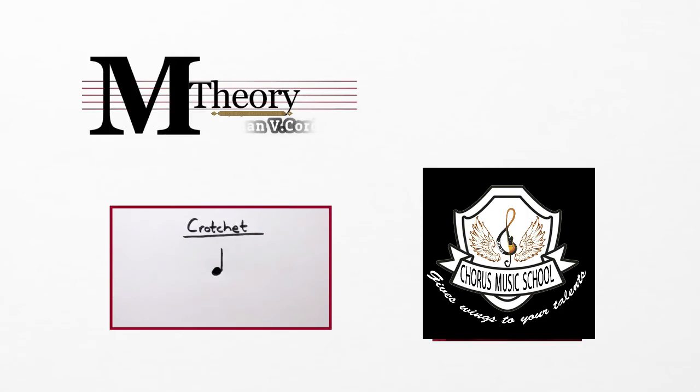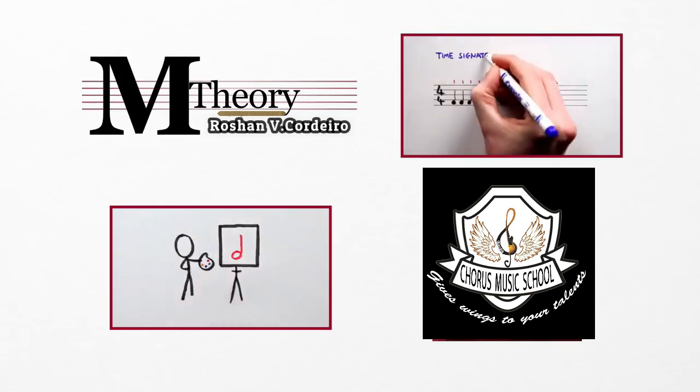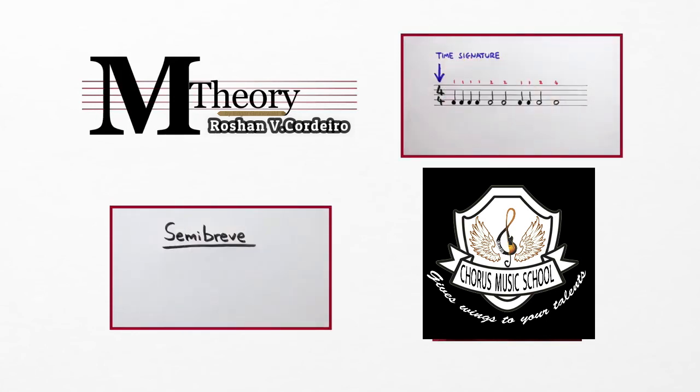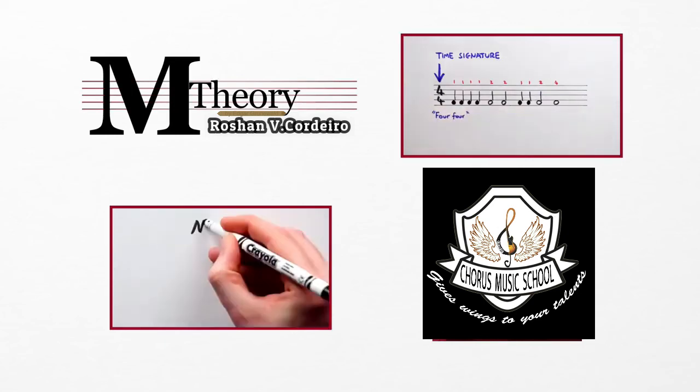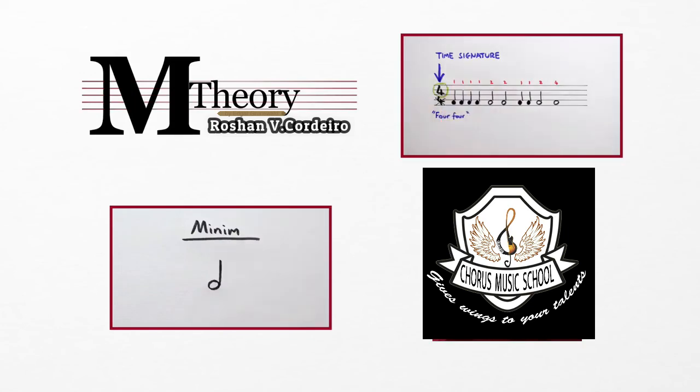It lasts for one quarter the length of a semibreve and gets one count. Think of it like this: four counts, two counts, and one count. Easy. With the counting down, let's look at the time signature at the beginning of the tune. This particular time signature is called four four. For now, let's forget about the bottom number and focus on the more important top number.